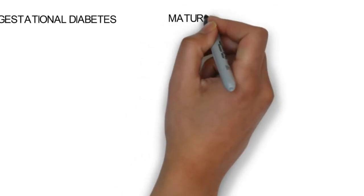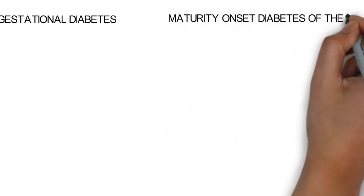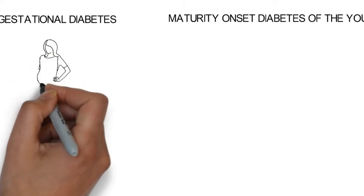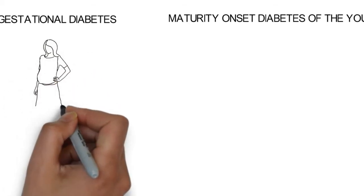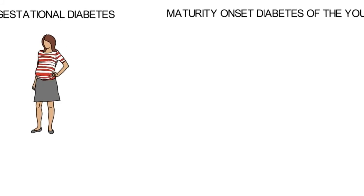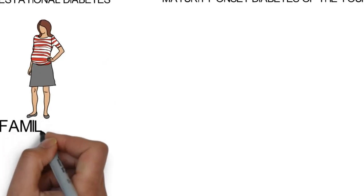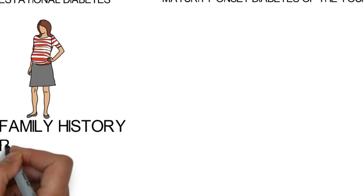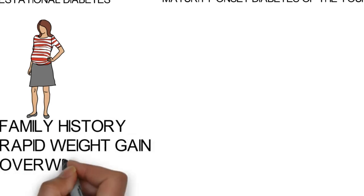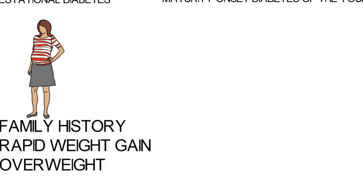Other types of diabetes include gestational diabetes and maturity onset diabetes of the young. Gestational diabetes means diabetes that develops during pregnancy. It is seen in individuals who have a family history of gestational diabetes, who develop rapid weight gain during pregnancy, or are overweight before pregnancy.